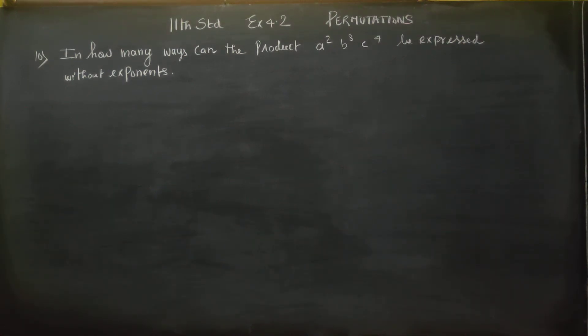Hello 11th standard students. In exercise number 4.2, in how many ways can the product a squared b cubed c to the power 4 be expressed without exponents? Without exponents means how can this be written out? We write it as a a b b b c c c c.